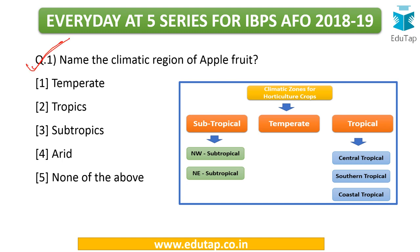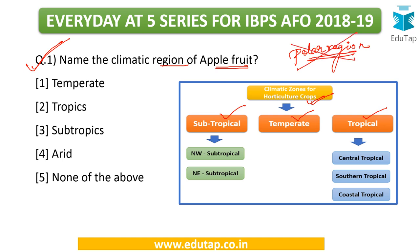So the first question: name the climatic region of apple fruit. There are various climatic zones when you talk about cultivating crops — subtropical, temperate, and tropical. There is one other zone known as the polar region, but this region does not have suitable climatic conditions for crops to be grown there, so we are eliminating this region for horticulture crops. The answer for this particular question is temperate. Now here comes my first question for you: what is the optimum temperature required for the apple plant to grow? Kindly mention the range in the comment section below.